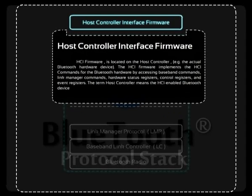Next is the Host Controller Interface firmware. HCI firmware is located on the host controller, for example the actual Bluetooth hardware device. The HCI firmware implements the HCI commands for the Bluetooth hardware by accessing baseband commands, link manager commands, hardware status registers, control registers, and event registers.